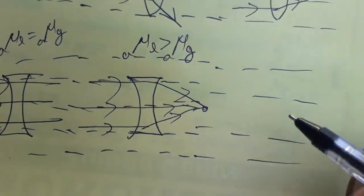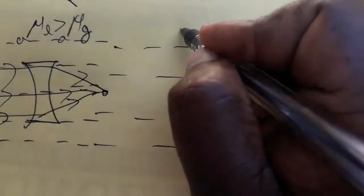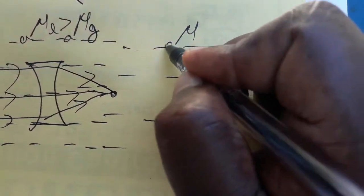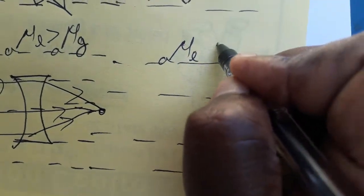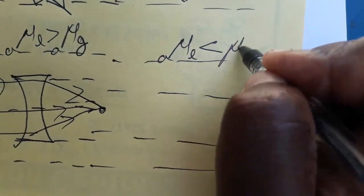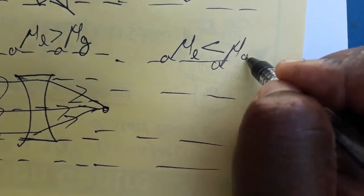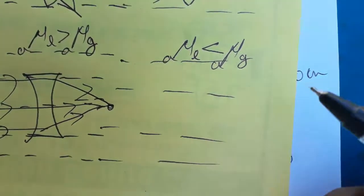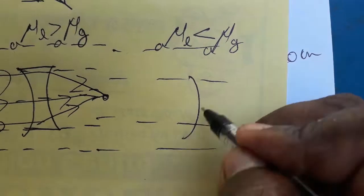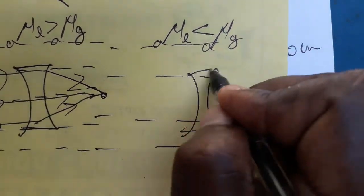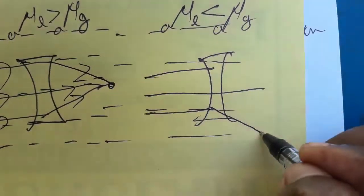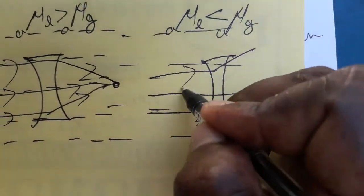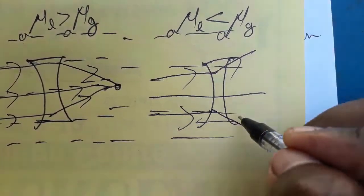When the refractive index of liquid is less than the glass refractive index, the concave lens behaves normally — it acts as a concave lens as usual. Thank you.